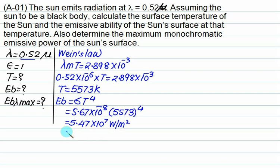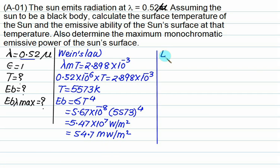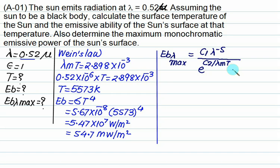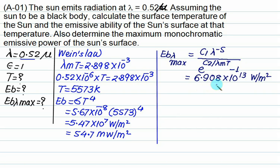This is a huge value — the sun generates 54.7 megawatts per meter square. Eb_lambda_max is given by Planck's equation with lambda equals 0.52 times 10 to the power minus 6 and lambda_m times T equals 2.898 times 10 to the power minus 3. The result comes out to be 6.908 times 10 to the power 13.